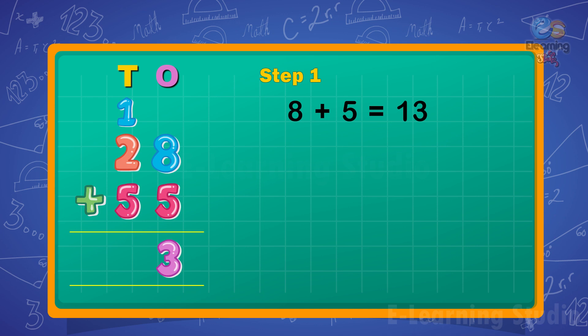Step 2: Next, add the tens. 2 plus 5 plus 1 is equal to 8 tens. Write 8 under the tens column. Thus, the sum is 83.